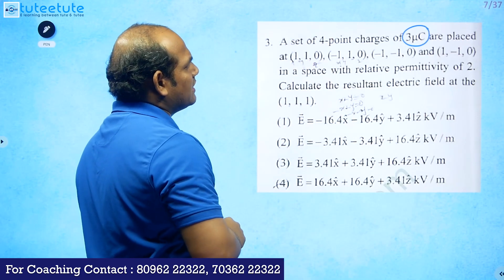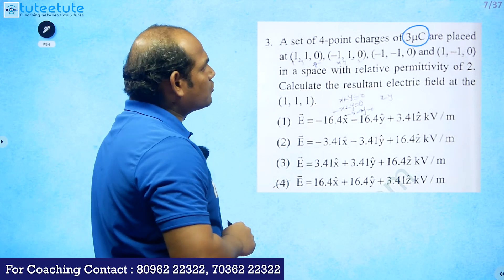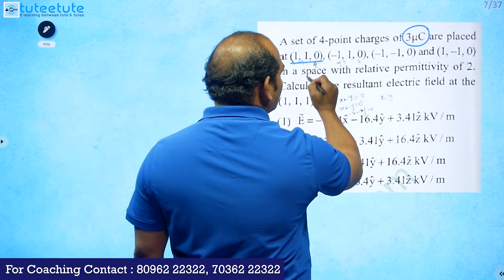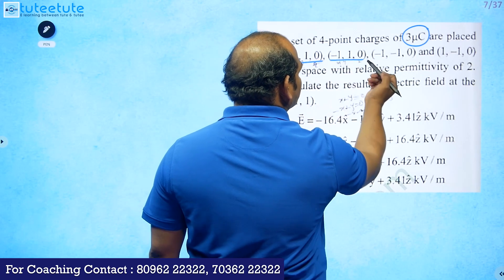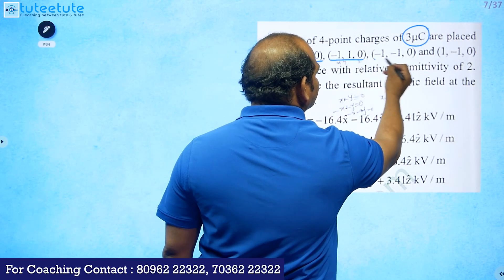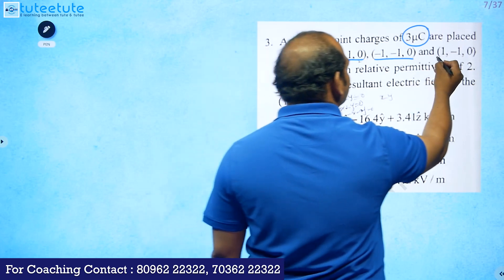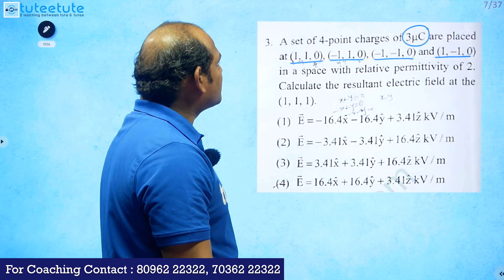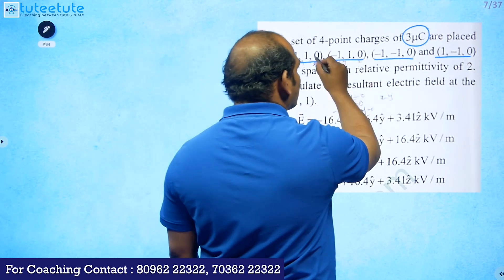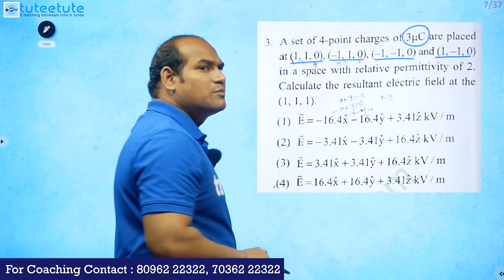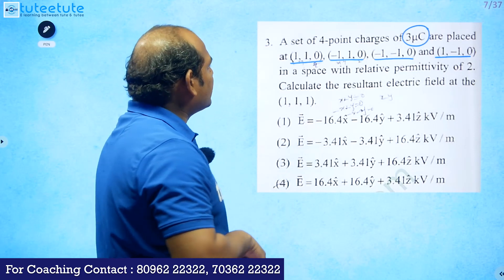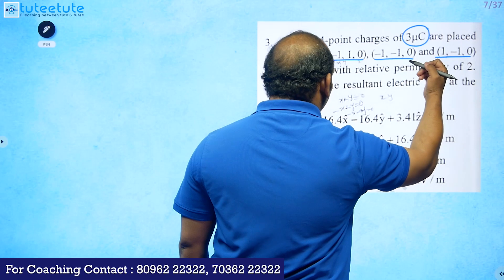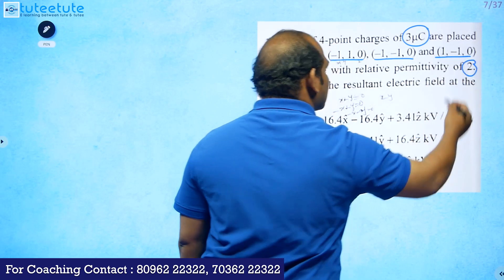Four point charges of three micro coulombs are placed at (1,1,0), (-1,1,0), (-1,-1,0), and (1,-1,0). In all these points the z-coordinate is zero, meaning all these points are available on the x-y plane.